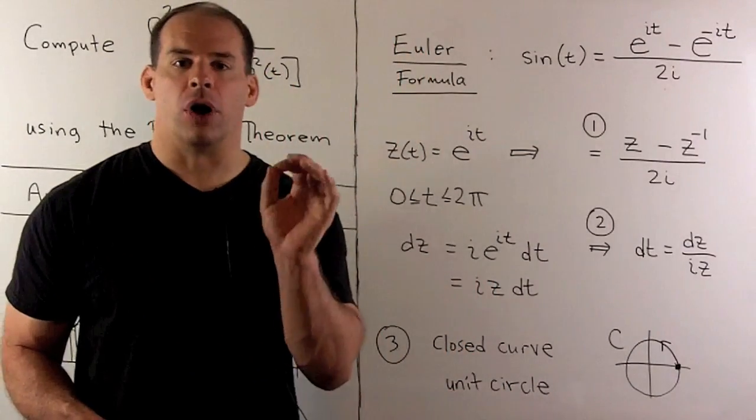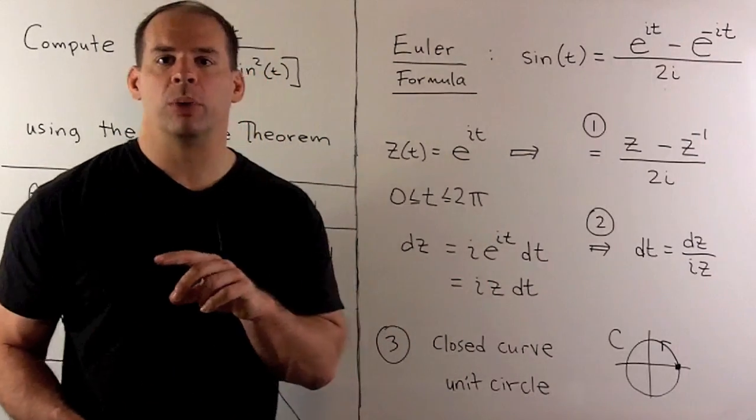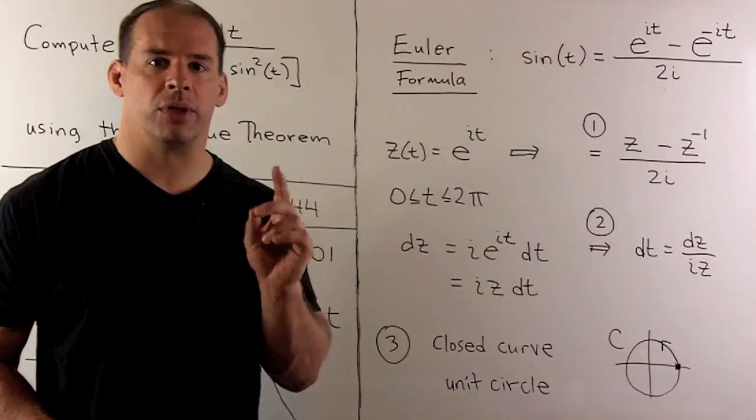Finally, for our curve, we note, this is just the parametrization for one loop around the unit circle going counterclockwise. So, that's the curve that we're using.